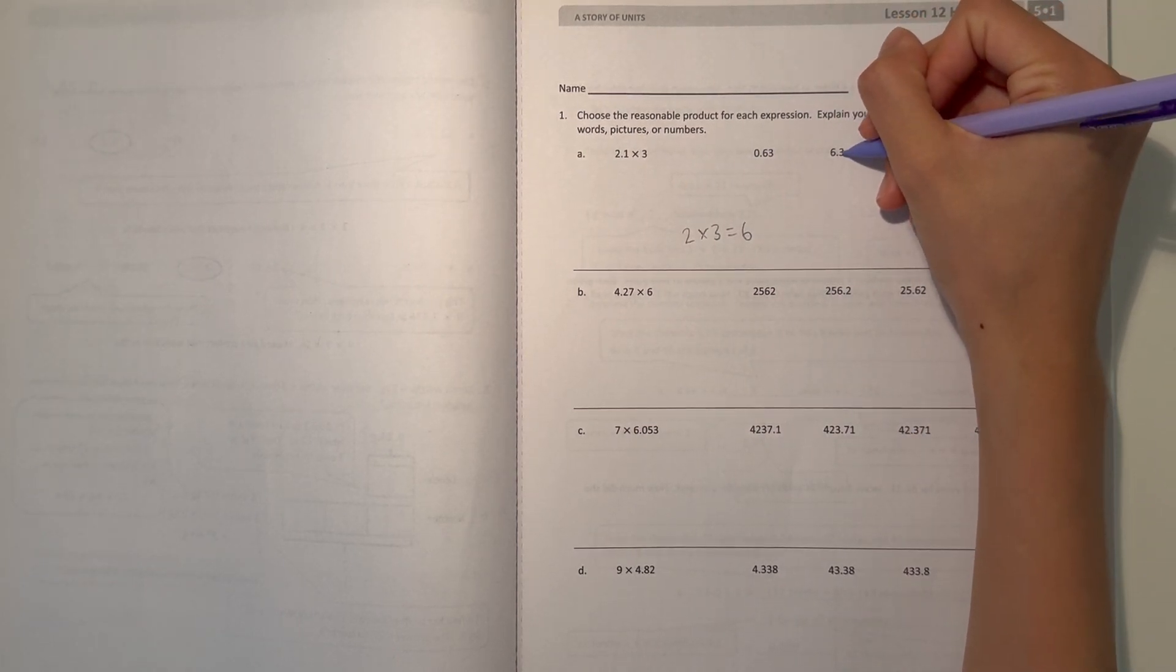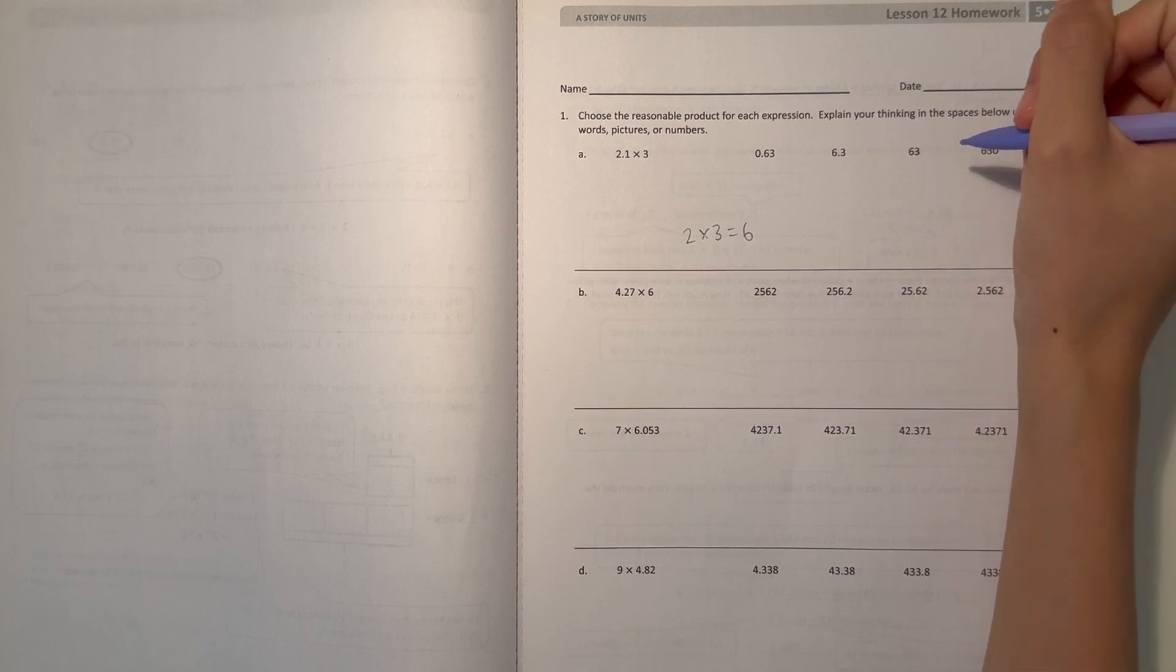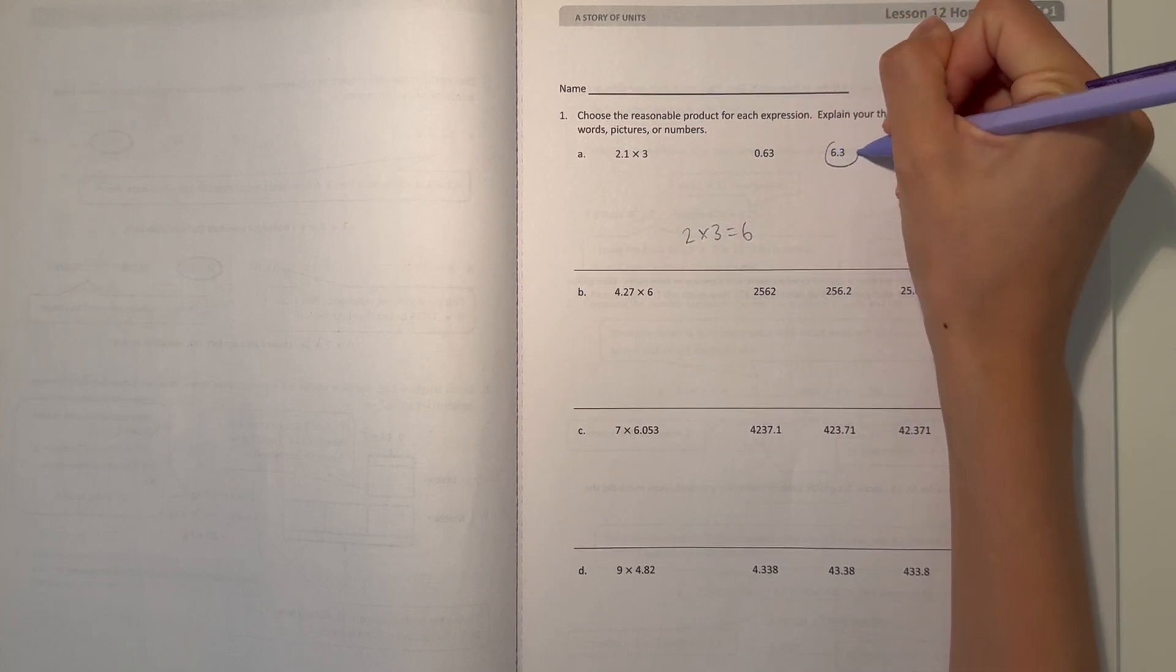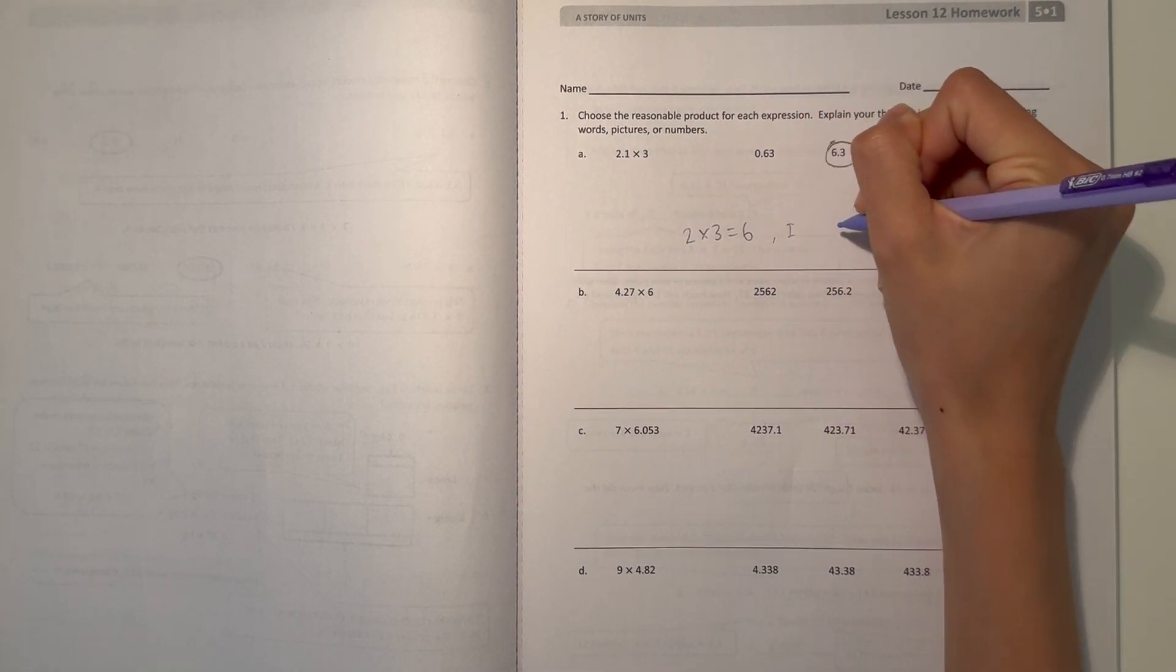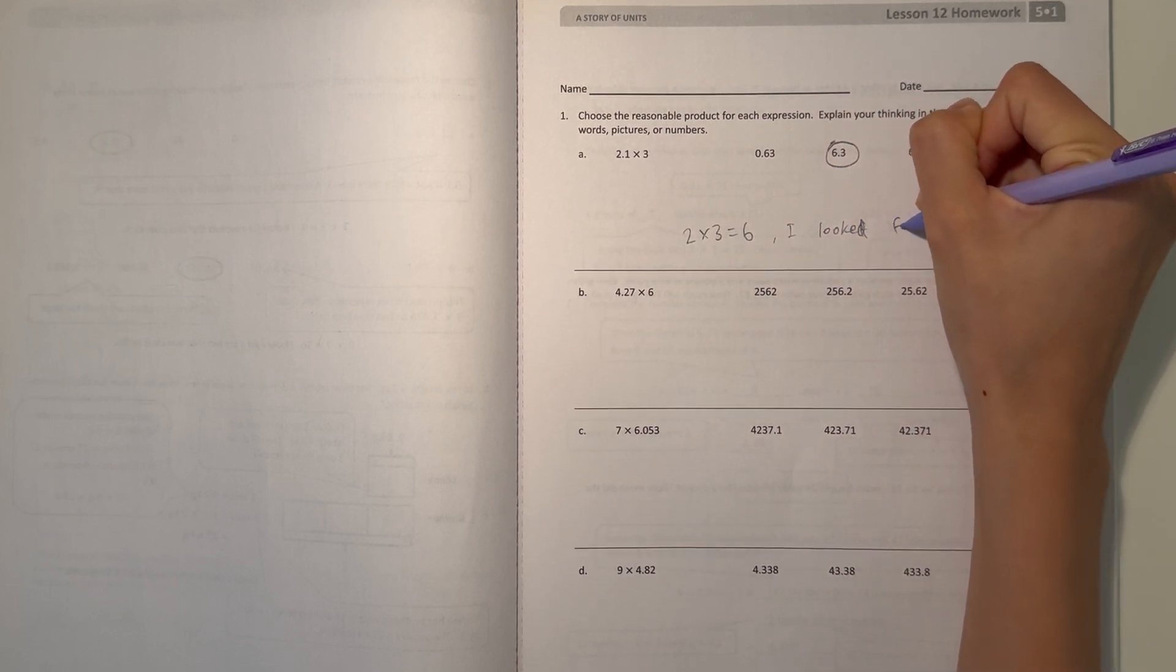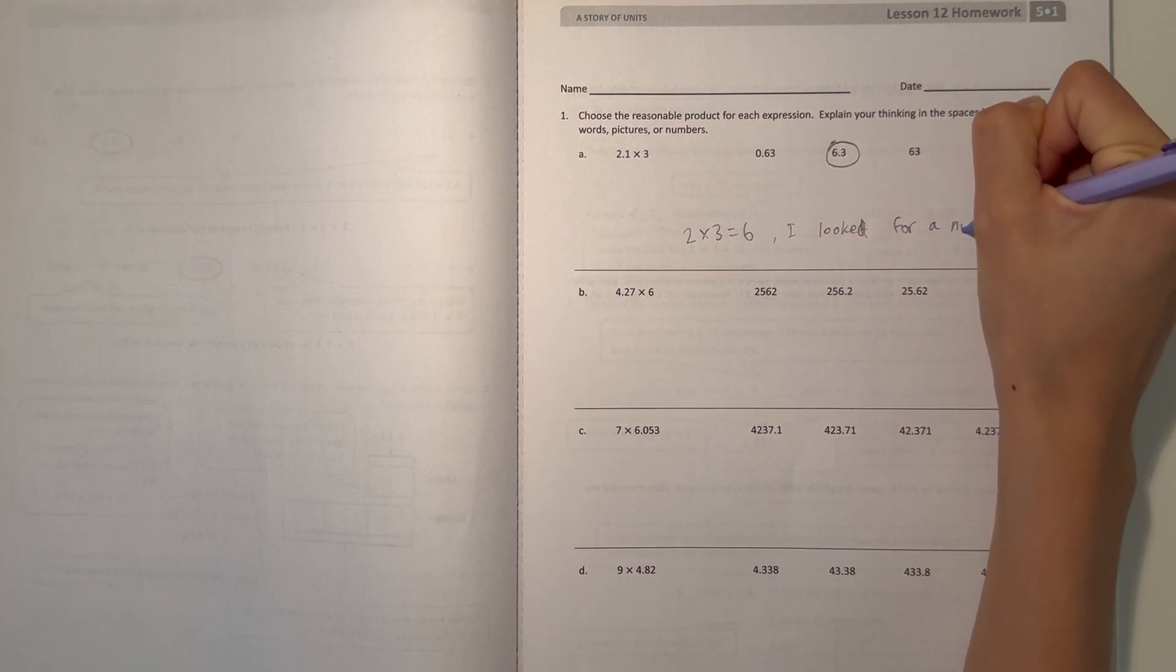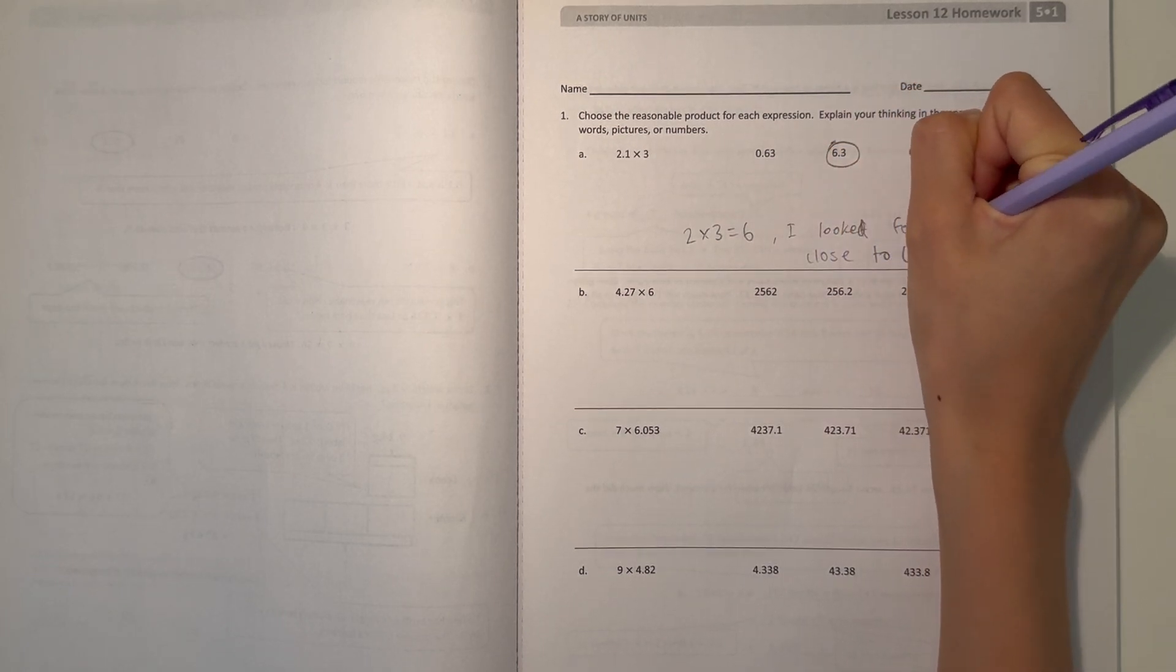So here we have 0.63. That is not at all close to 6, so that is probably not our answer. And then here I have 6.3, maybe, because it's pretty close. And then now I have 63 and 630. So out of these four numbers, 6.3 would be the closest. So this would be the most reasonable. I'm going to say, I looked for a number close to 6.